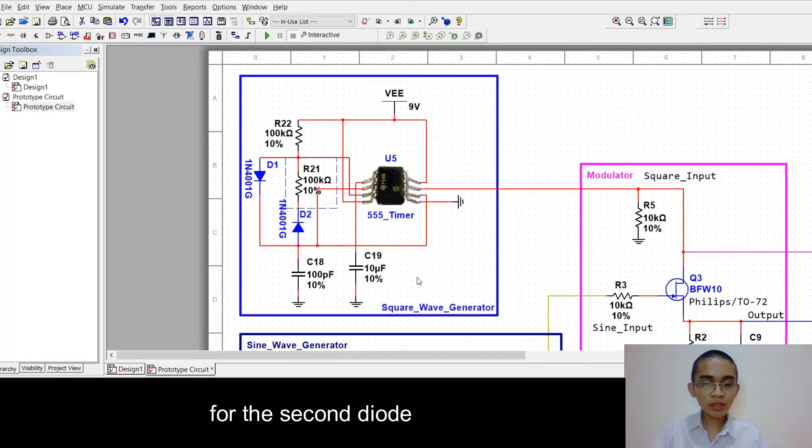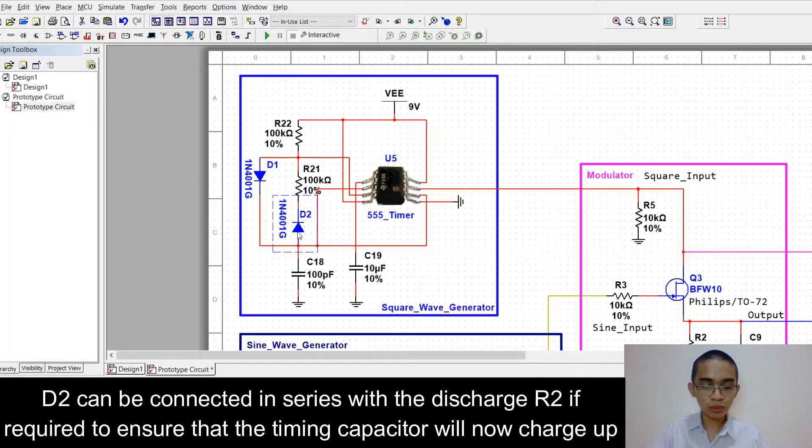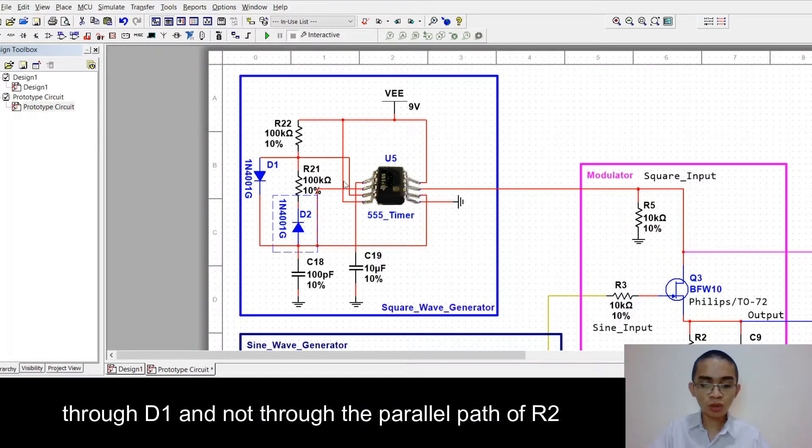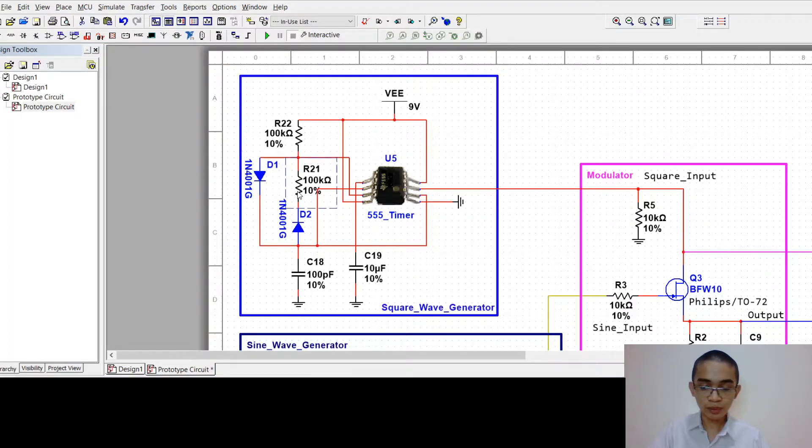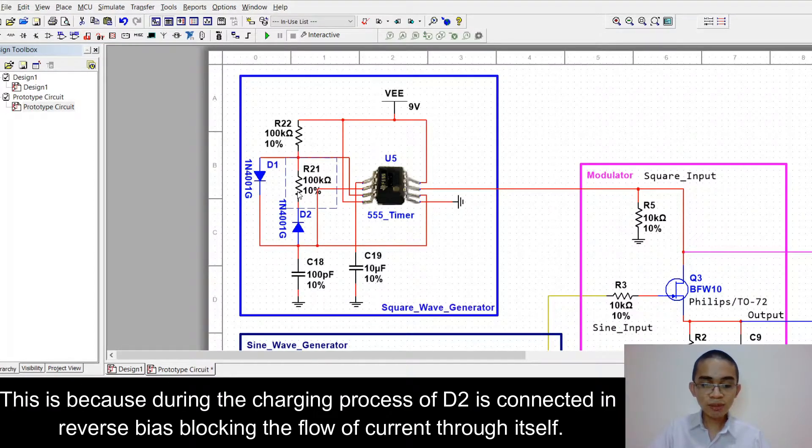For the second diode, D2 can be connected in series with the discharge resistor R2 if required to ensure that the timing capacitor will now charge up through D1 and not through parallel path of R2. This is because during the charging process diode 2 is connected in reverse bias blocking the flow of current through itself.